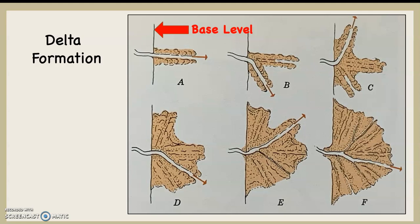The evolution of a delta goes like you see there, which is you go from A to B. Why does it change course? Either increased discharge or maybe decreased discharge can cause this to happen. Nevertheless, it's going to continue to deposit material, and over time rivers are going to change courses, including at their mouths. And you can see at C the delta really begins to grow, and eventually D, E, and F show the full-blown delta-shaped delta.